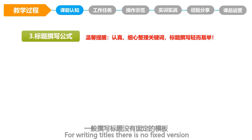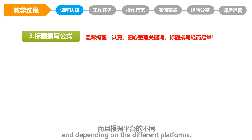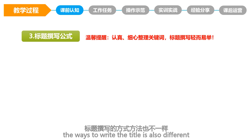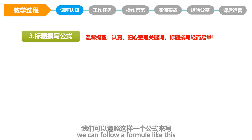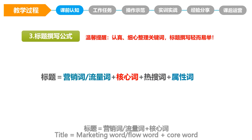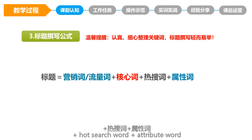For writing titles, there is no fixed formula, and depending on the different platforms, the ways to write a title are also different. But generally speaking, we can follow a formula like this: Title equals marketing word or flow word, plus core word, plus hot search word, plus attribute word.